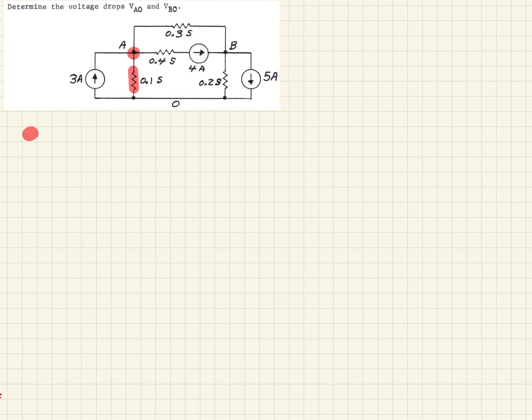If we take that first resistor right here, what we will have is 0.1 times VA0. So that's just Ohm's law - that's your susceptance times your voltage.